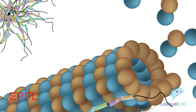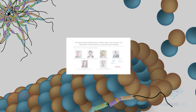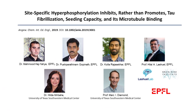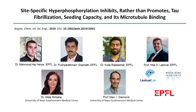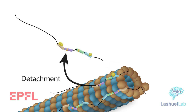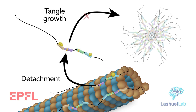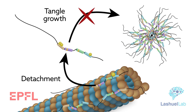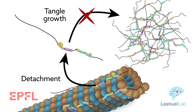But new findings propose a subtle, though crucial, refinement. Researchers from the BrainMind Institute at the EPFL in Switzerland have discovered that while phosphorylation does trigger tau detachment, it doesn't appear to promote tangle growth. It actually protects against it.